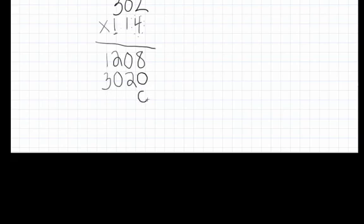Now, since we're in the 100th spot, I need two spacers to get us out to the 100th spot. 1 times 2 is 2. 1 times 0 is 0. 1 times 3 is 3.